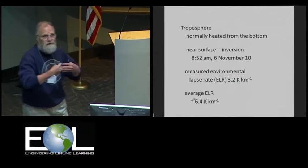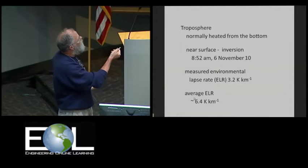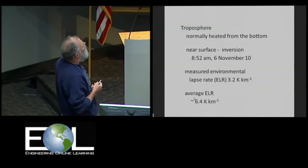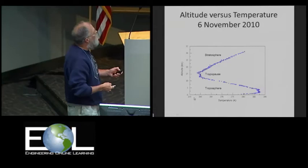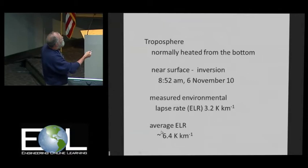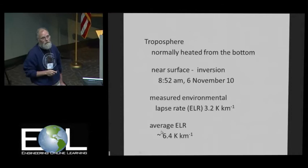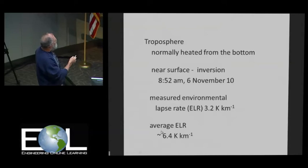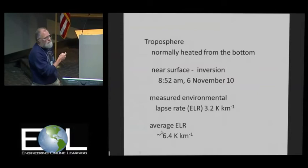The troposphere is normally heated from the bottom. That is, the Earth warms up from sunlight, radiates infrared radiation, and that warms up the atmosphere. On this day, we had this inversion. The Earth had not yet warmed up very much, so the lower atmosphere was still fairly cool. And as you went up, it warmed up instead of cooled down. The measured environmental lapse rate, that's sort of the one over the slope of this line, was 3.2 Kelvin per kilometer, which is a very low lapse rate. The average from what I've been able to see in books is 6.4 Kelvin per kilometer, and I'm going to try and acquire more temperature profiles to see if that's accurate. I'd be especially interested in summer profiles to see if we get high lapse rates.